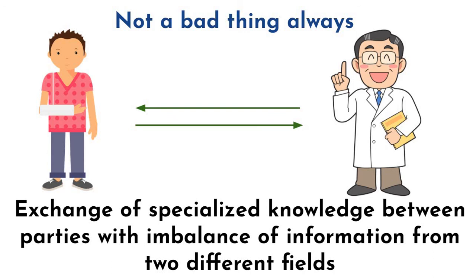They can exchange their specialized knowledge with each other to create net benefits for both parties. Division of labor in society results in increased productivity for the overall society. Thus, not all information imbalance is bad for the economy.